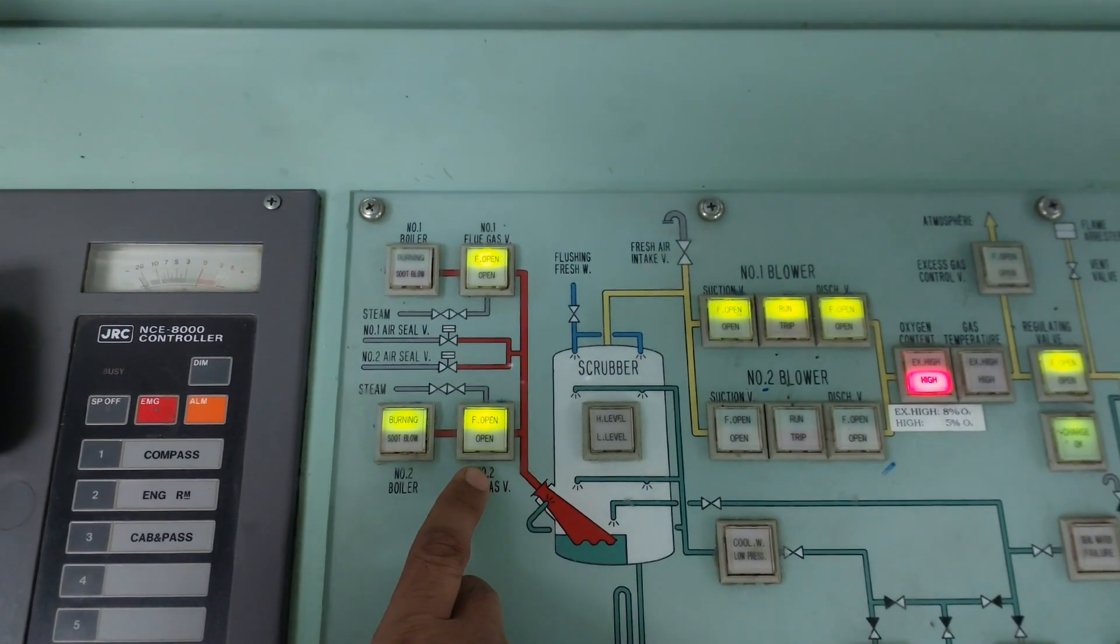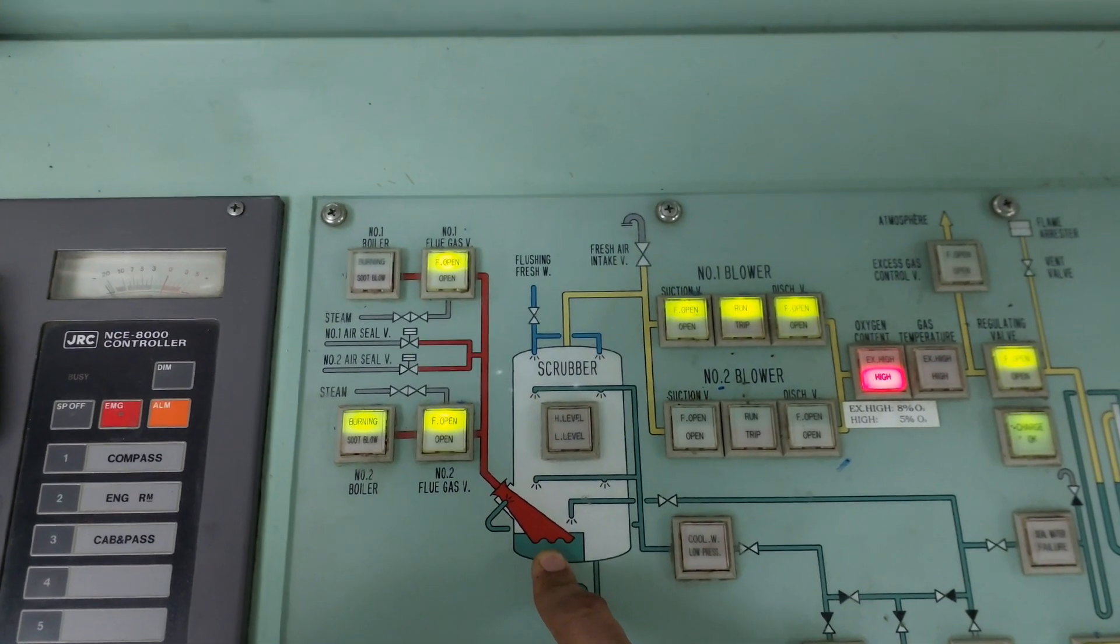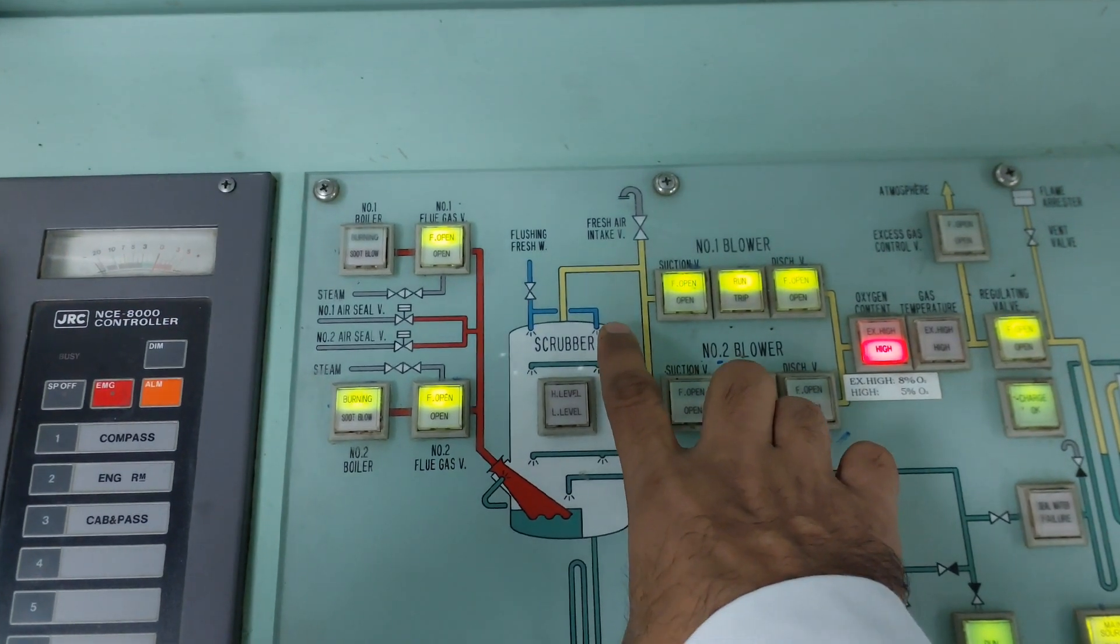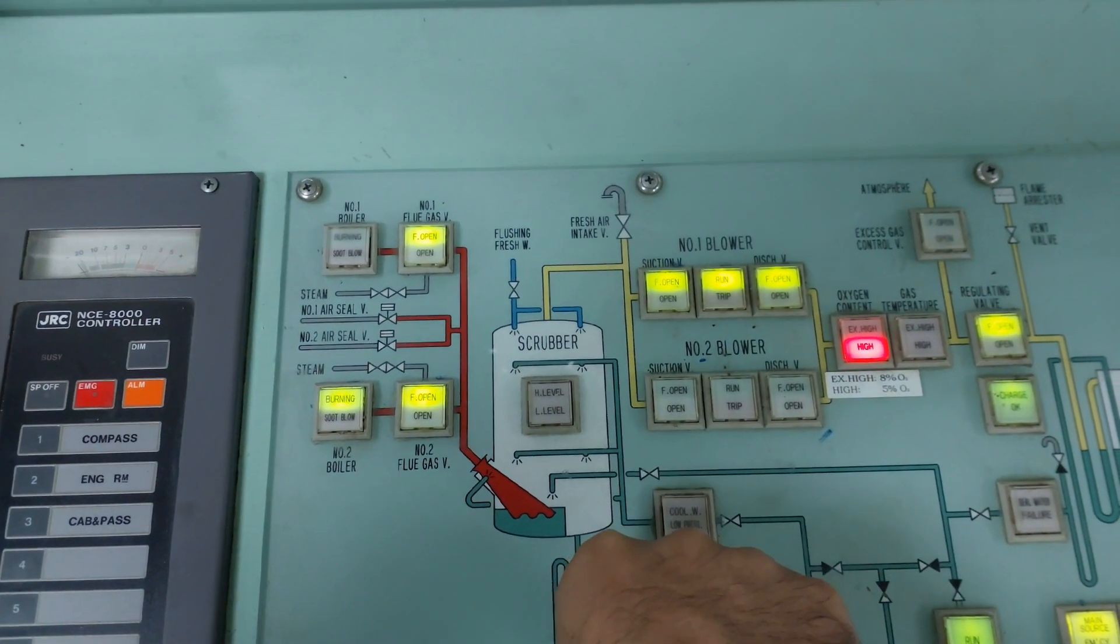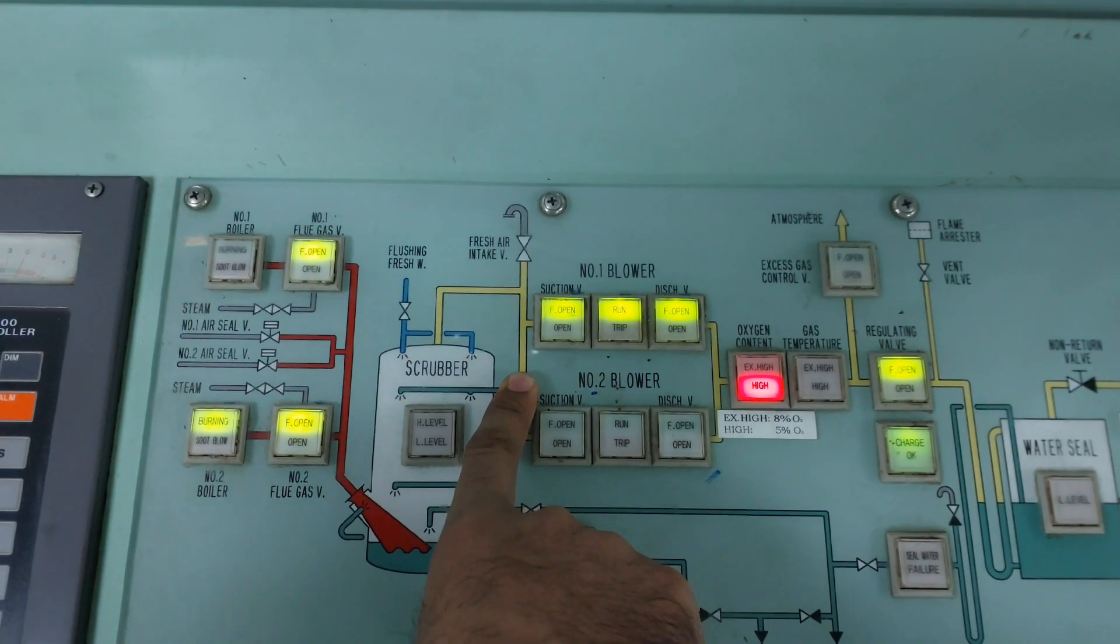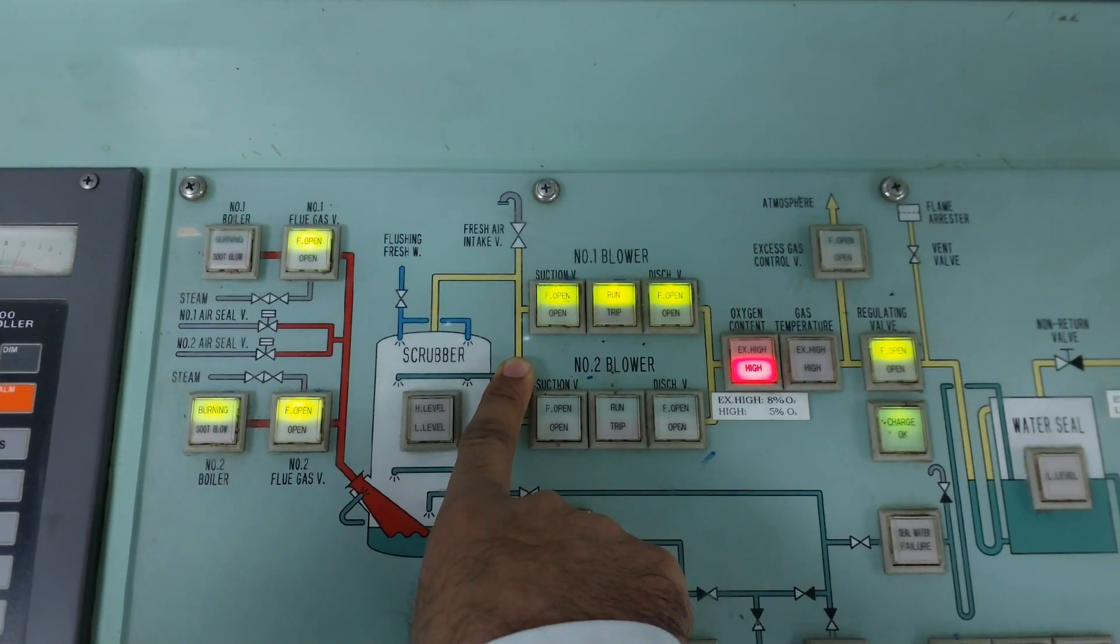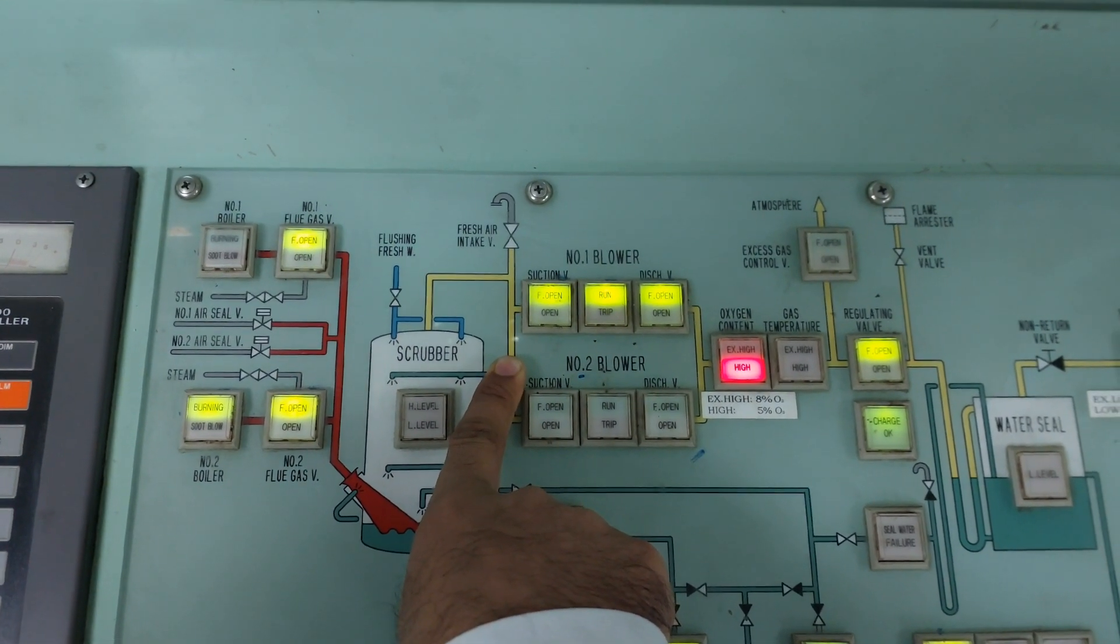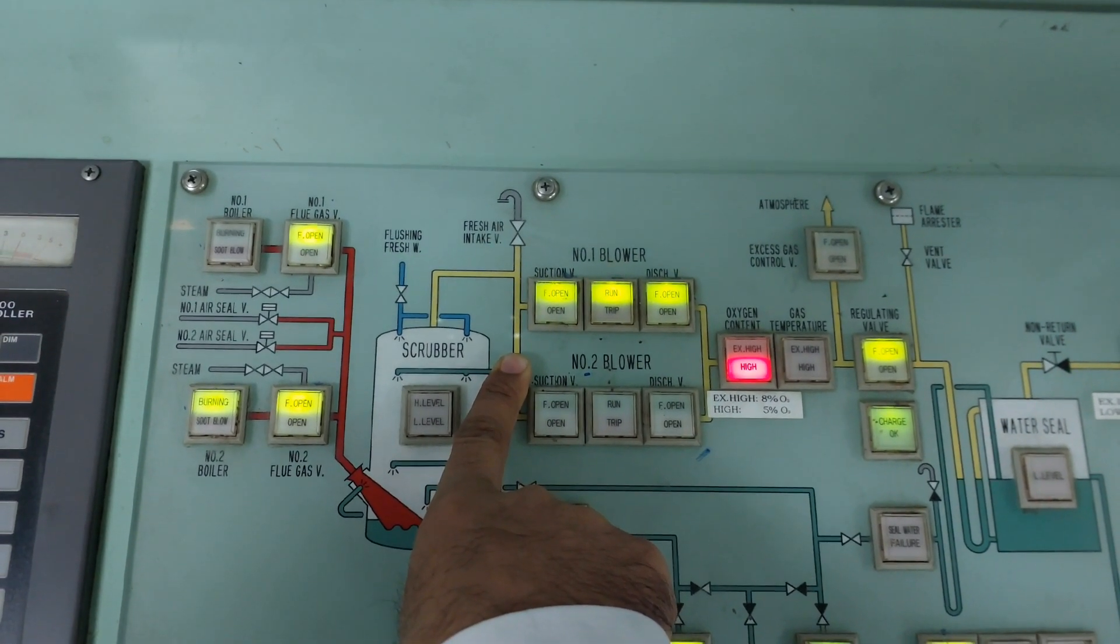From the scrubber tower, washing and all the system flushing will be completed. After that it will go to the IG line. You can see there are two blowers. It depends on you which blower you are starting. Normally the engineer will ask you to start blower number one or two. In today's case, they asked us to start blower number one.